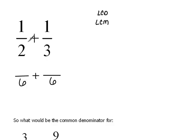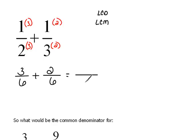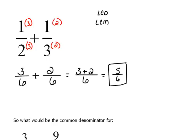We say: what do we multiply 2 by to get 6? That would be 3. So we do the exact same thing to the top — 1 times 3 would be 3, so now we've created an equivalent fraction. For the second fraction, 3 times 2 gives us 6, so we do the same thing to the top: 1 times 2 would be 2. Now that we have a common denominator, we add the numerators — 3 and 2 — over that common denominator, giving us 5/6. Remember, the most important part of working with rationals is you must have a common denominator.